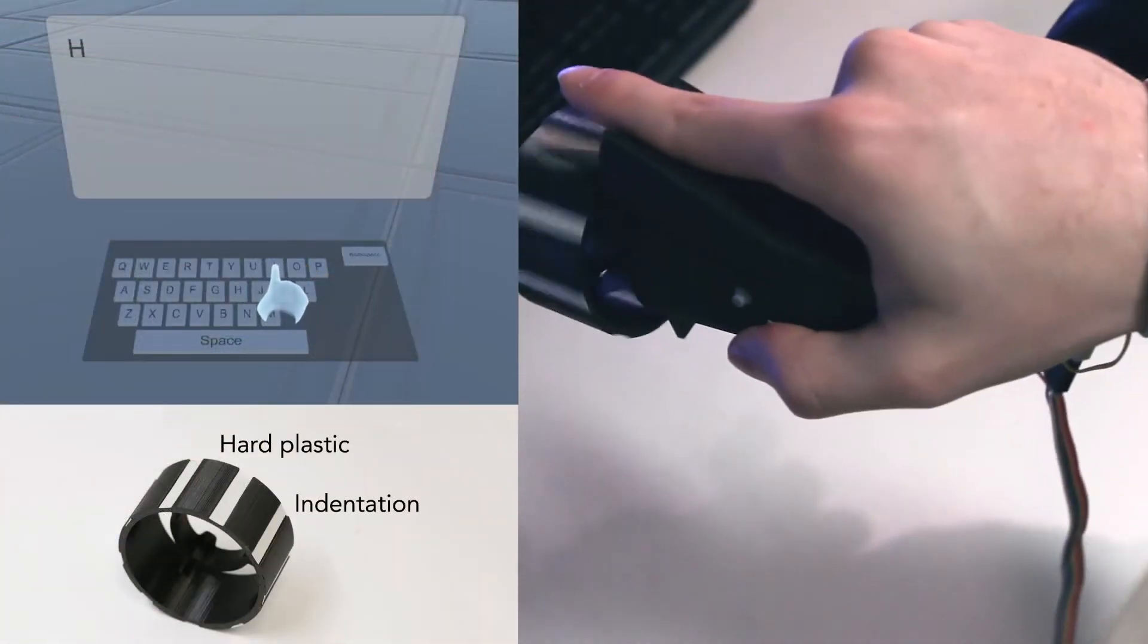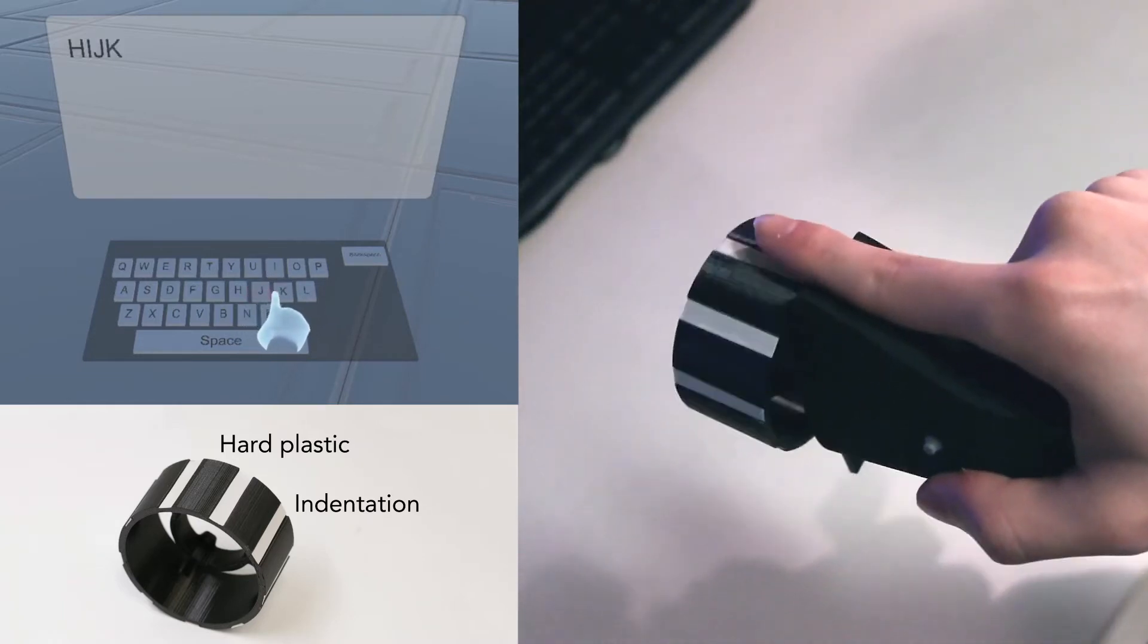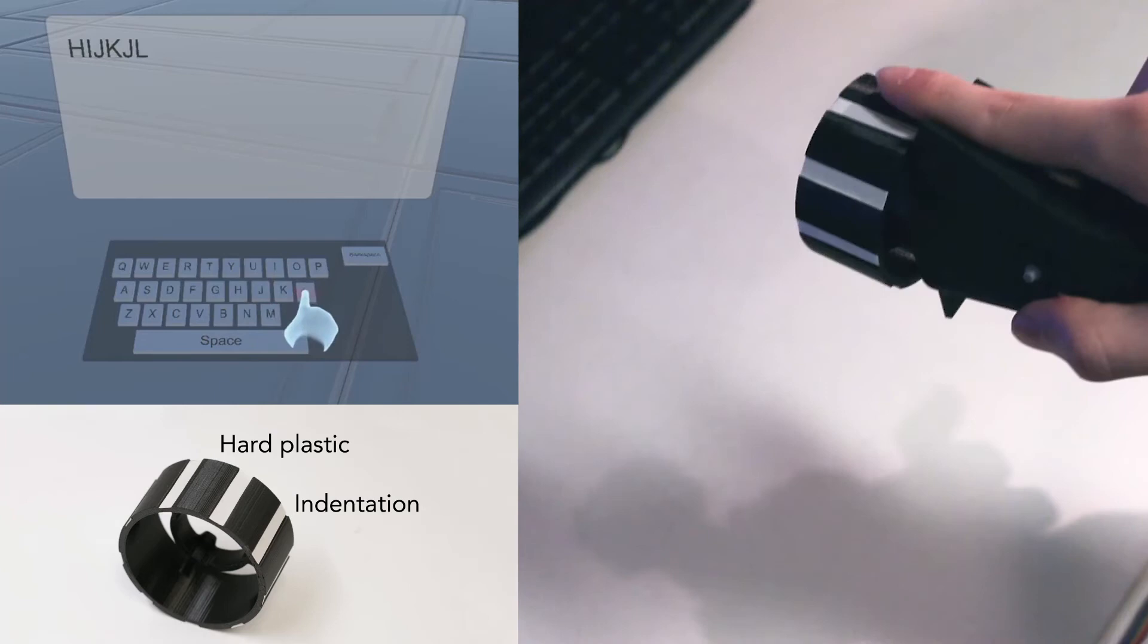In this scene, we show how shapes on the wheel can add to the realism of a virtual keyboard. A user can even brush along the rows of keys to feel the grooves.